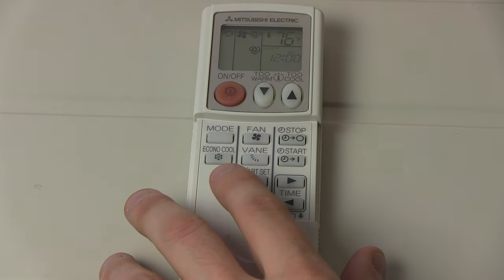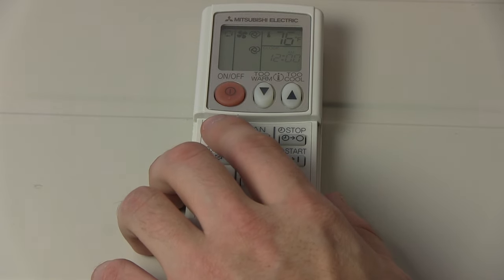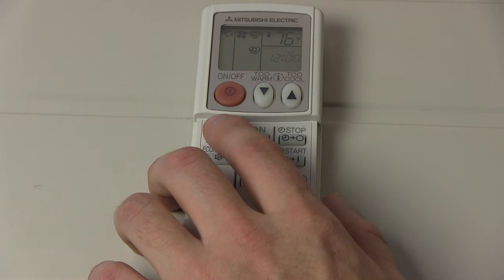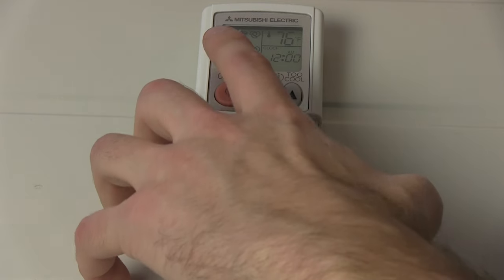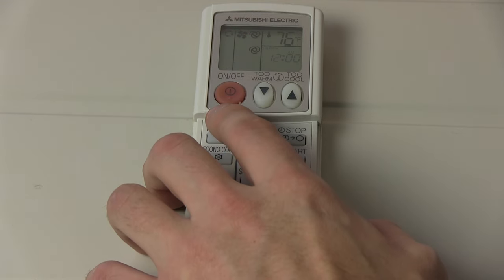To change the mode, press the mode button to cycle between the different modes. Our modes are represented by pictures. Currently, we see a picture with arrows pointing at each other. This represents auto mode.